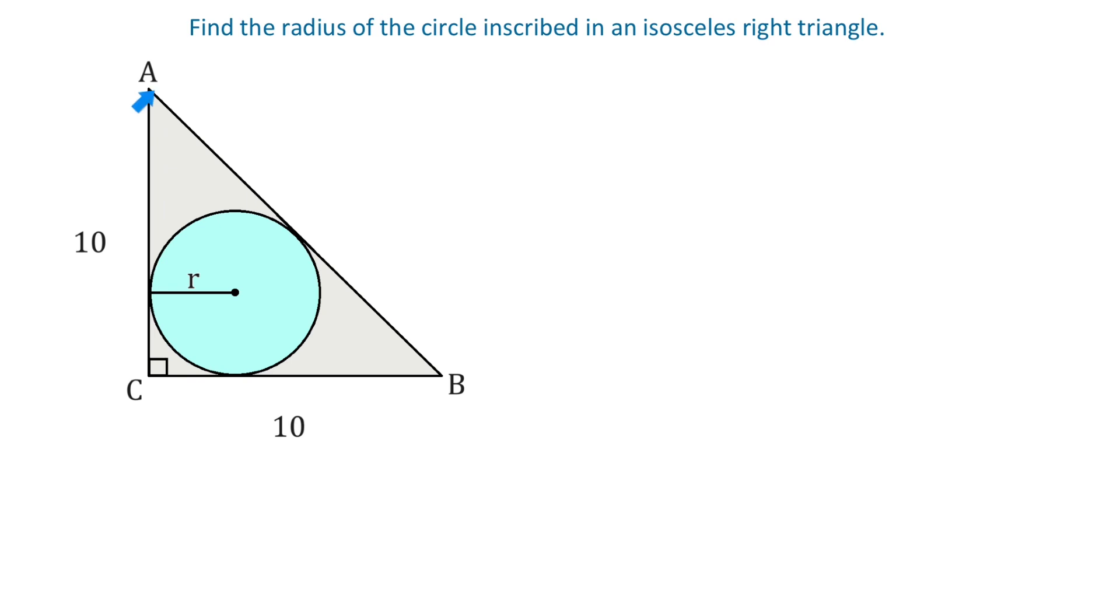First, we need to know that because AC is tangent to the circle, it forms a right angle with the radius. And if we draw the radius perpendicular to BC, then we will form another right angle. So now, we have a square where each side is R.